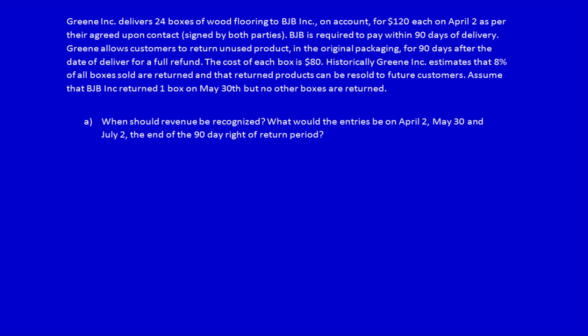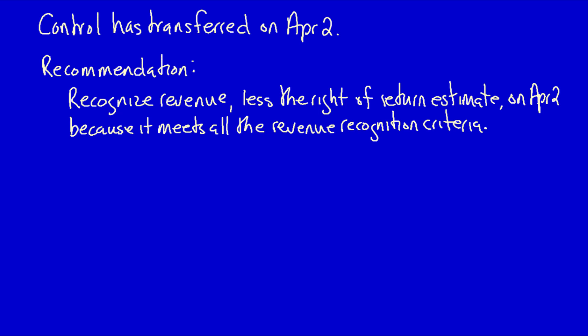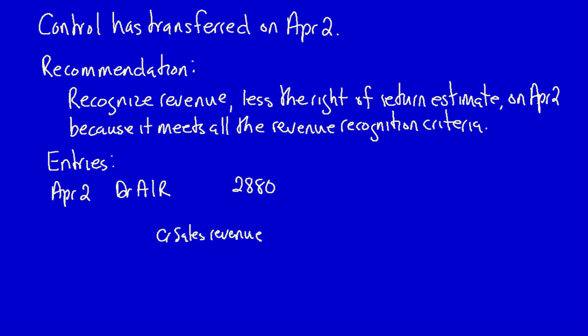Continuing with the application of IFRS 15 revenue recognition to Green Ink. On April 2nd, the company got the legal right to collect cash from their customer BJB — debit accounts receivable for two thousand eight hundred and eighty dollars, the full amount charged on the invoice. Credit sales revenue: per our analysis, we can only recognize two thousand six hundred and forty-nine dollars and sixty cents after removing the estimate for the right of return. The difference goes into a liability account called refund liability: two hundred and thirty dollars and forty cents.